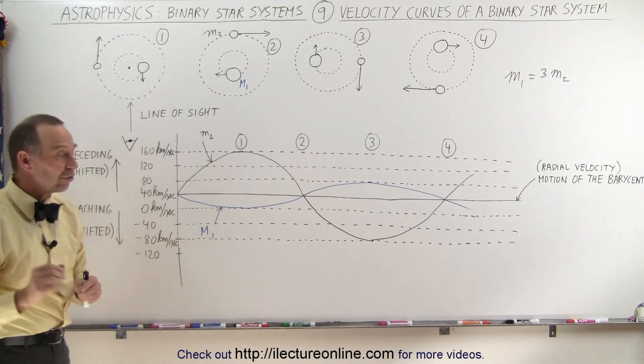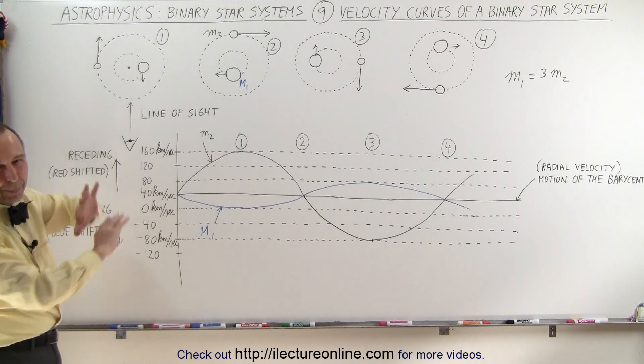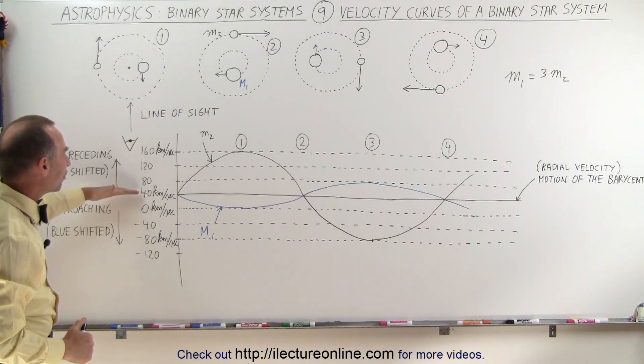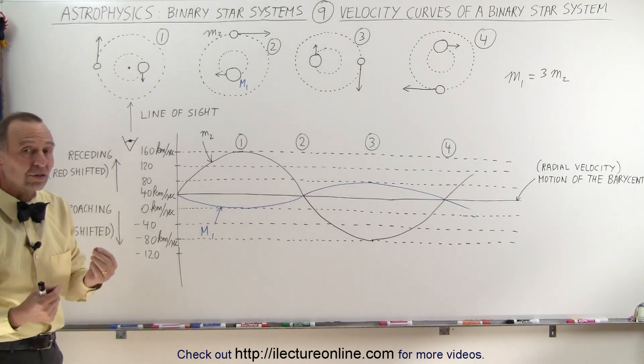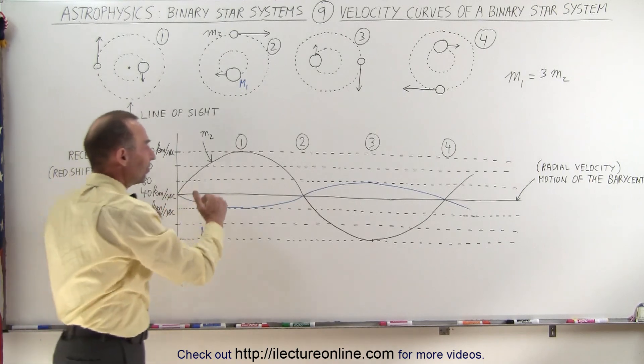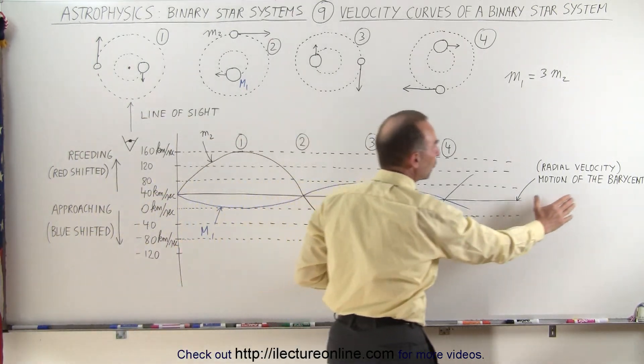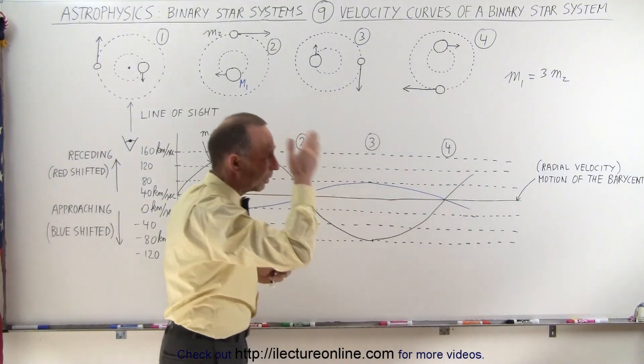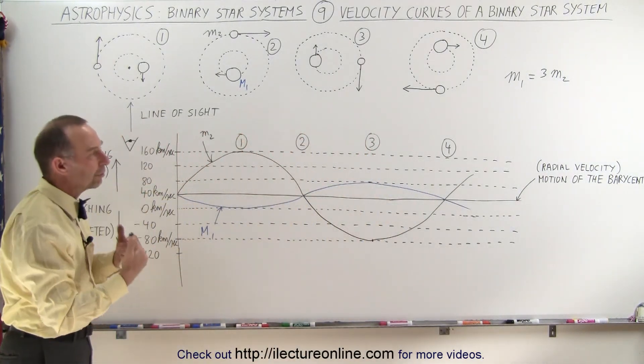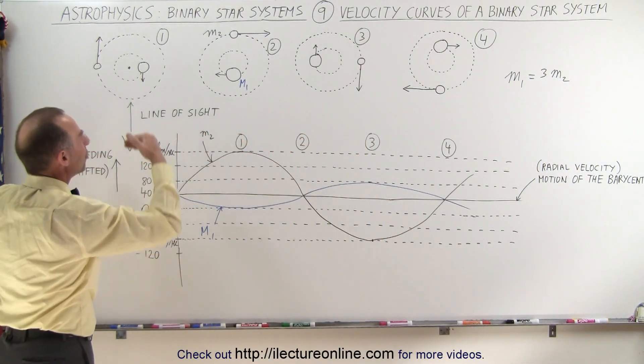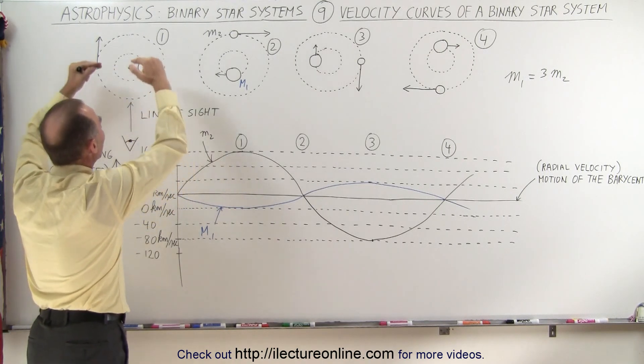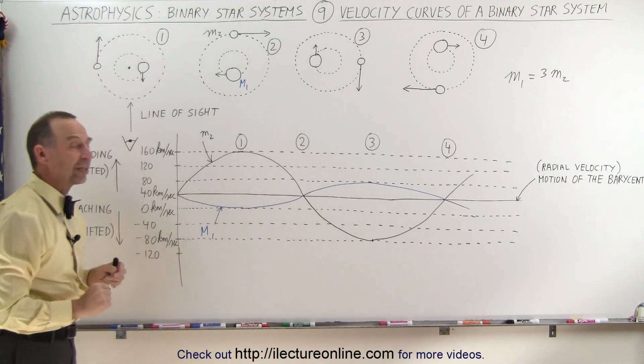Now what's also interesting here is, even though this is just a hypothetical case, we do see things like this, that the average velocity is 40 kilometers per second in the positive direction, which means that the barycenter itself is actually moving away from us in the radial distance. So there's a radial velocity of the barycenter moving away from us. Both stars, as they're revolving around the barycenter, they're moving away from us at 40 kilometers per second.